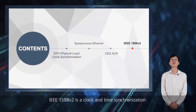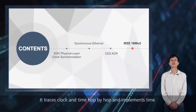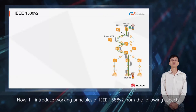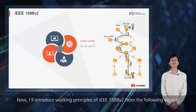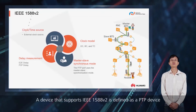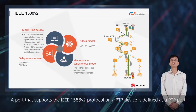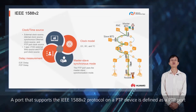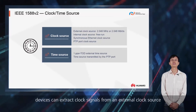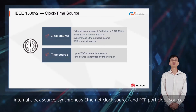IEEE standard 1588 version 2 is a clock and time synchronization technology applicable to packet networks. It traces clock and time hop by hop and implements time synchronization with sub-microsecond precision. I'll introduce working principles of IEEE 1588 version 2 from the following aspects: clock time source, clock model, master-slave synchronization mode, and delay measurement. A device that supports IEEE 1588 version 2 is defined as a PTP device, and a port that supports the IEEE 1588 version 2 protocol on a PTP device is defined as a PTP port. By using IEEE 1588 version 2, devices can extract clock signals from an external clock source, internal clock source, synchronous Ethernet clock source, and PTP port clock source.